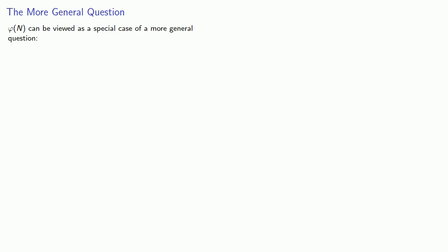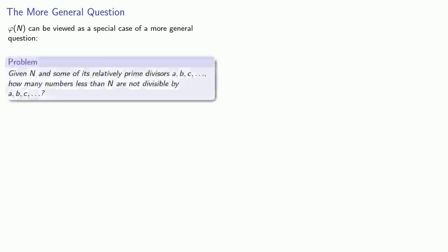Dirichlet approaches the problem as follows. Phi of n can be viewed as a special case of a more general question. Given some value n and some of its relatively prime divisors a, b, c, and so on, how many numbers less than n are not divisible by any of a, b, c, and so on? Now if a, b, and c are all the prime divisors of n, this question has answer phi of n.